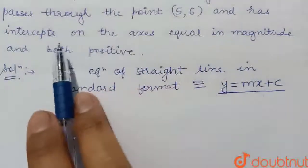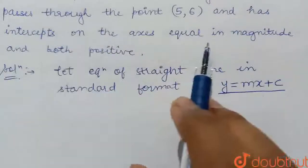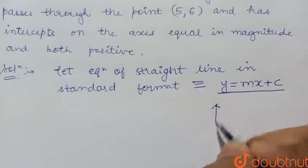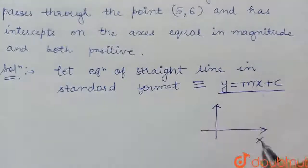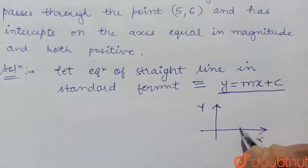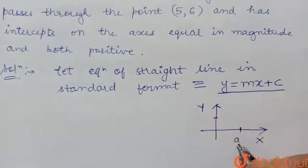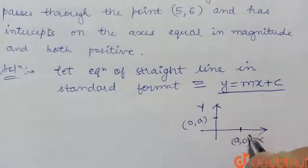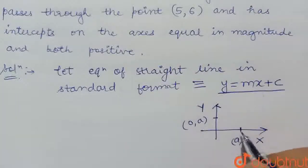We have one piece of information given: the intercepts are equal in magnitude and both positive. If we look at the coordinate axes, both x and y, the intercepts are at points (a,0) and (0,a). So the intercepts have equal value a and both are positive.